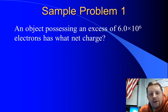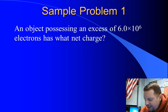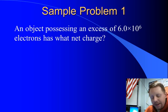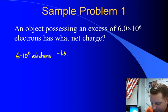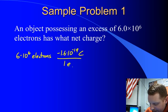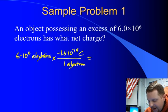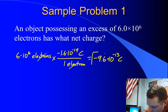Let's see if we can't put this together to solve a couple of problems. Let's say an object possesses an excess of 6 times 10 to the 6th electrons. What's its net charge going to be? Well, to figure that out, if we have 6 times 10 to the 6th electrons, and there is a charge of negative 1.6 times 10 to the minus 19 coulombs, a negative elementary charge per every electron, if I multiply those, my electrons make a ratio of 1, and I end up with 6 times 10 to the 6th times negative 1.6 times 10 to the minus 19 coulombs, for a value of about negative 9.6 times 10 to the minus 13 coulombs.